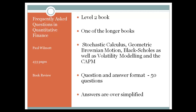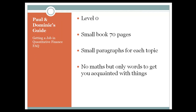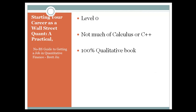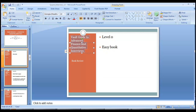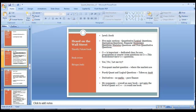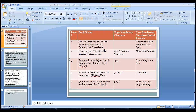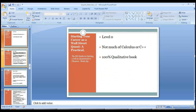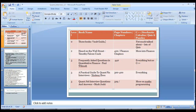The three zero-level books you want to start with are: 'Wall Street to Advance Financial and Quantitative Interviews', the Paul Dominic guide, and 'Starting a Career as a Wall Street Quant'. These are the three books you can begin with. The Paul Dominic guide is a little bigger and the other is a very qualitative book. The 'Starting a Career as a Wall Street Quant' book is a good zero-level starting point — these books don't require you to know a lot of quant, but they'll still help you.